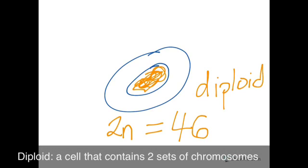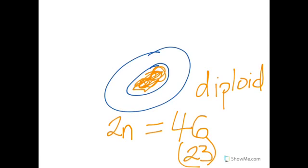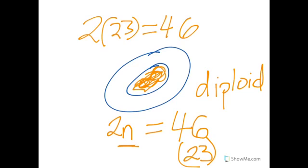Now this means there are 23 pairs of identical chromosomes. So our n is the number of pairs we have. So if we did the math here, we could say 2 times 23 would give us our 46 that we humans have. So we call our body cells 2n or diploid because they have 23 pairs or 46 total chromosomes.